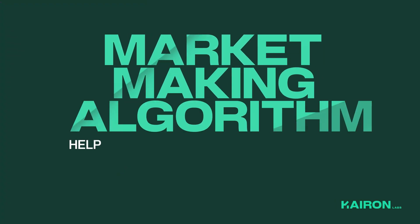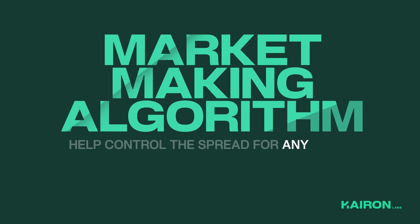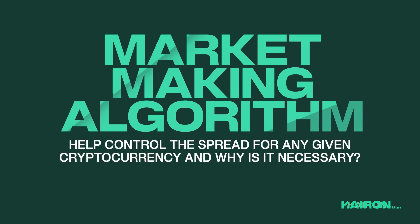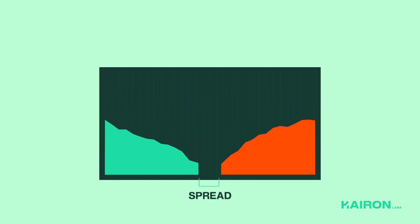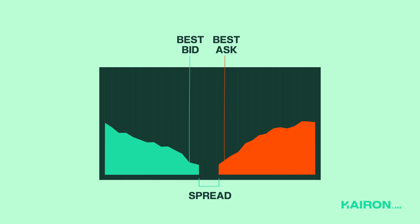How does a market making algorithm help control the spread for any given cryptocurrency, and why is it necessary? A market making algorithm ensures a tight spread by making sure the best bid and best ask orders are closely aligned at all times, allowing traders to enter and exit a position quickly.